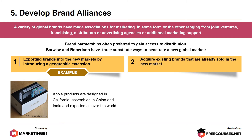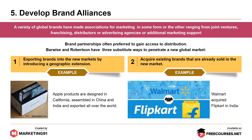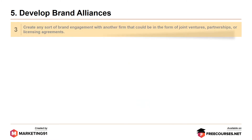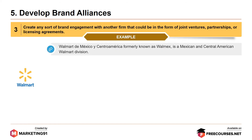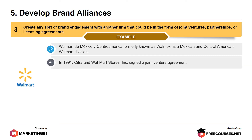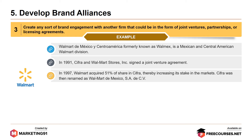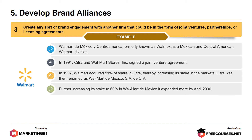Second, acquire existing brands already sold in the new market — for example, Walmart acquired India's leading retailer Flipkart. And finally, create brand engagement with another firm in the form of joint ventures, partnerships, or licensing agreements. For example, Walmart in Mexico is known as Walmex, a Mexican and Central American Walmart division. In 1991, Cifra and Walmart stores signed a joint venture agreement. In 1997, Walmart acquired 51% of shares in Cifra, thereby increasing its stake. Cifra was then renamed Walmart de Mexico, with its stake further increased to 60% by April 2000.